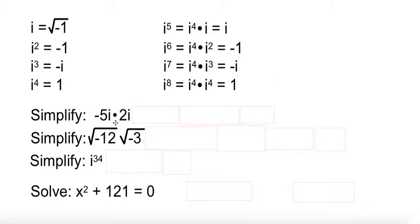Let's do a little bit of work with this. Negative 5i times 2i. Well, that's negative 10i squared. But we know what i squared is. i squared is negative 1. Negative 10 times negative 1 is 10.